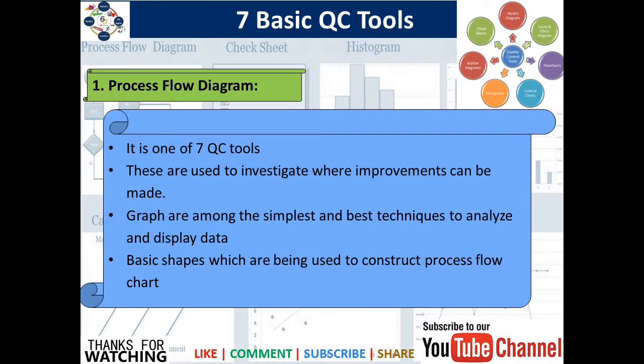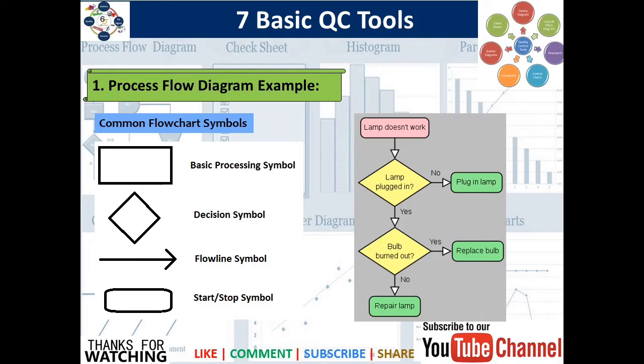The first QC tool is the Process Flow Diagram. It is used to investigate where improvements can be made. Graphs are among the simplest and best techniques to analyze and display data. Basic shapes are used to construct the process flow diagram. Common flowchart symbols include the basic processing symbol, decision symbol, flow line, and the start and stop symbol.